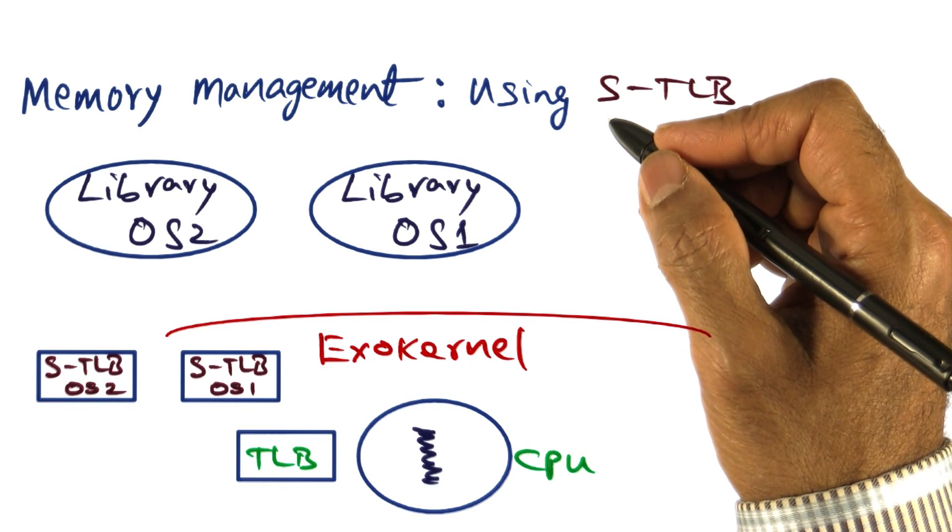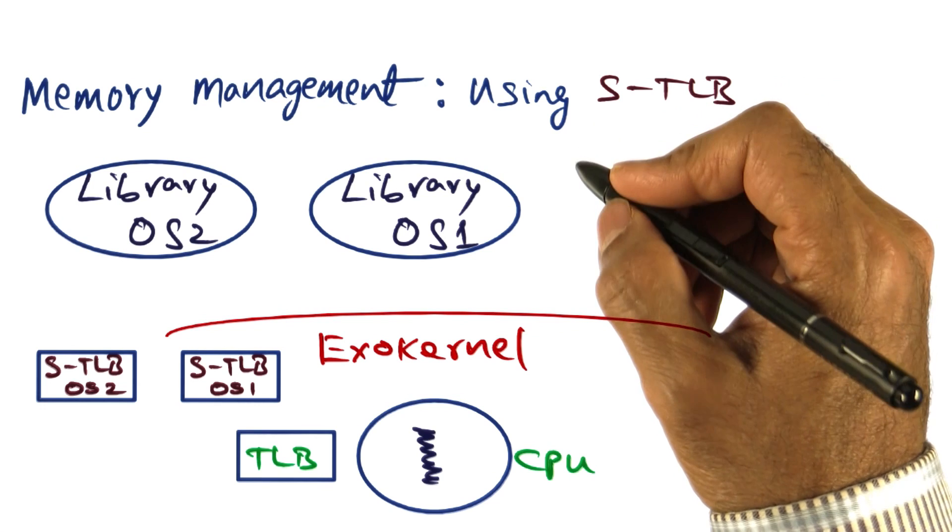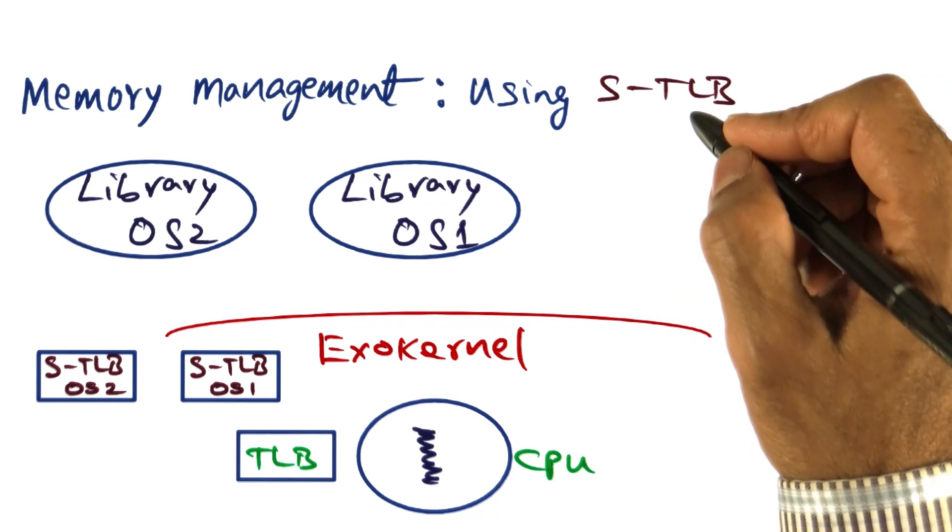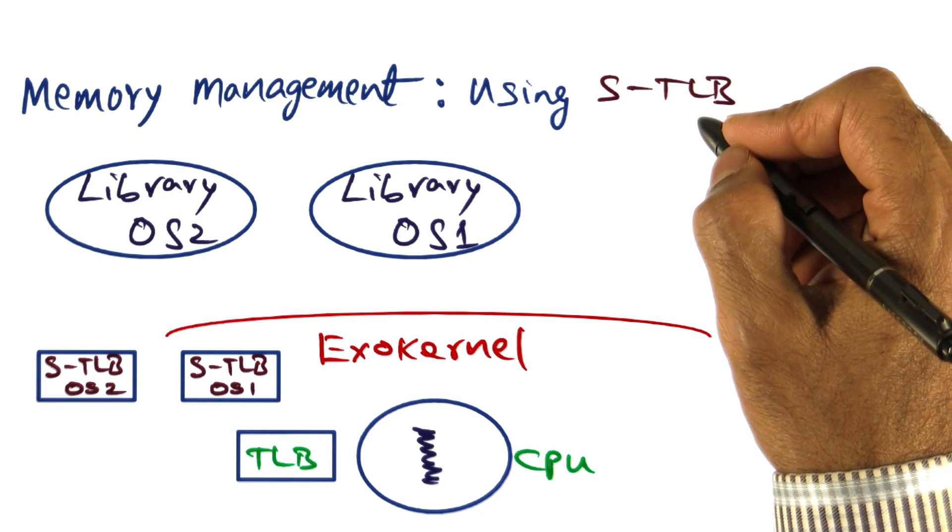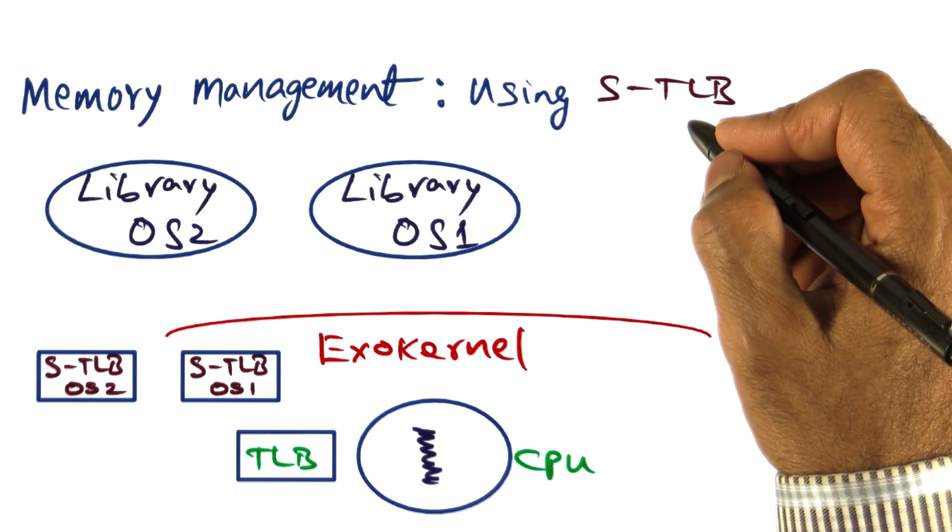I mentioned software caching as a mechanism that's available in exokernel for establishing secure binding, and software TLB is one specific example of using that software caching idea.